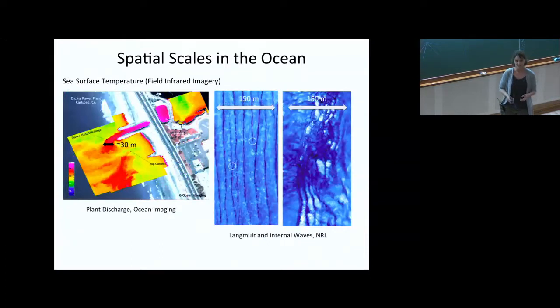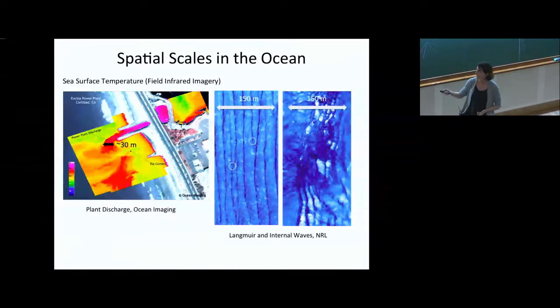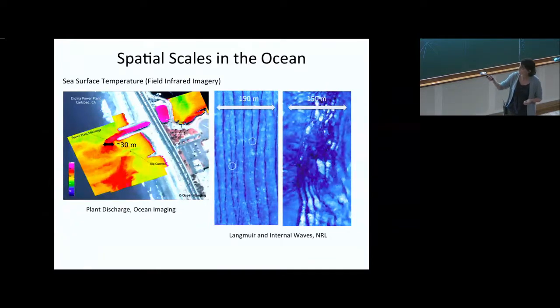We can kind of keep playing the same game. Here you see two temperature images from an infrared camera in the coastal ocean and in the upper open ocean. On the left-hand side in the coastal ocean, you're seeing a discharge from a power plant that's coming out in a current that's roughly 30 meters wide. And then you see the evidence of a rip current carrying the cooler water from inshore offshore that has scales of something like 10 meters across it. Similarly, if we look in the upper open ocean, here's just surface images of temperature variability. Here the widths across the horizontal axes are about 150 meters. And so you can see scales on the order of 10 meters and smaller in terms of the variability associated with Langmuir cells as well as internal wave convergence.